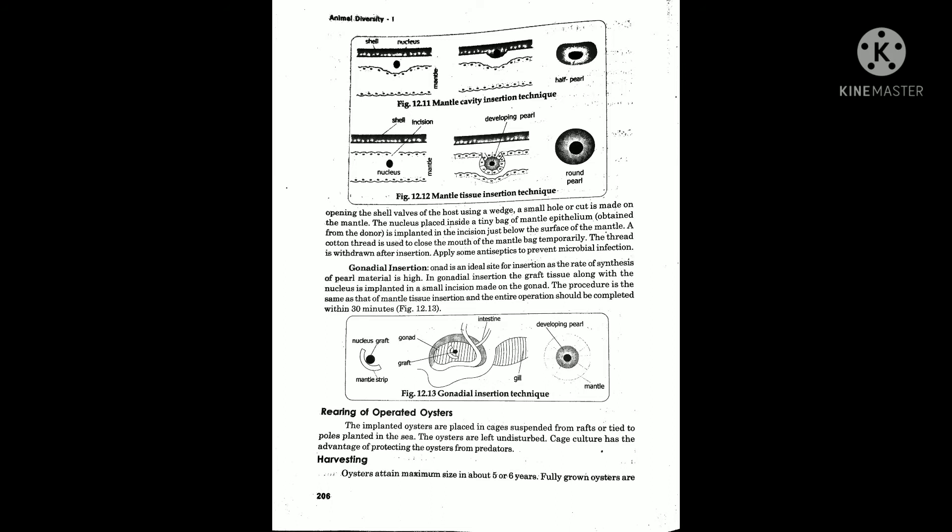The gonadal insertion is the most ideal insertion. The gonad is an ideal site for insertion as the rate of synthesis of pearl material is high. In gonadal insertion, the grafted tissue along with the nucleus is implanted in a small incision made on the gonad. The procedure is the same as that of the mantle tissue insertion.